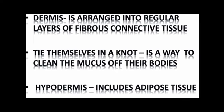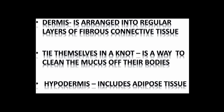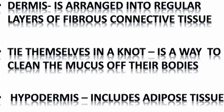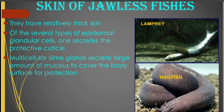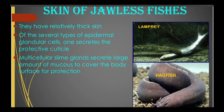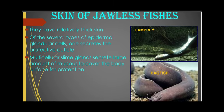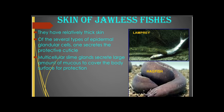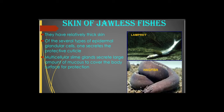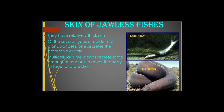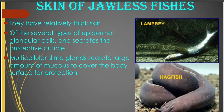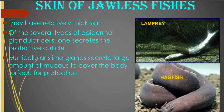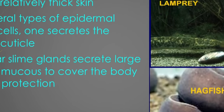The hypodermis of the fish consists of adipose tissue. Taking a look at the jawless fishes, they have relatively thick skin. As you can see in the illustration here, the lamprey and the hagfish are both jawless fishes. You have several types of epidermal glandular cells which secrete the protective cuticle that covers the skin of the jawless fishes.